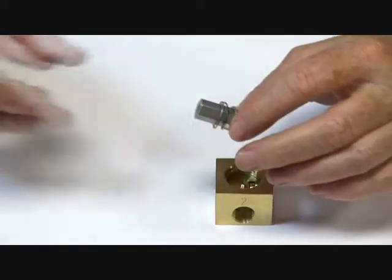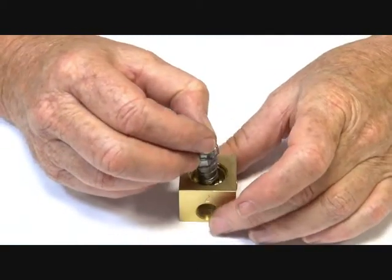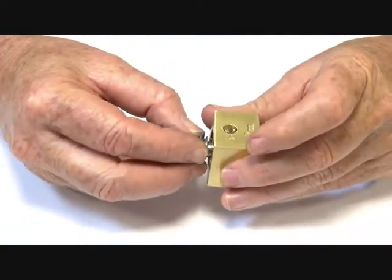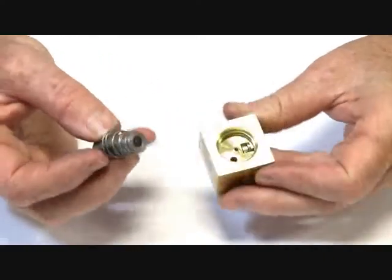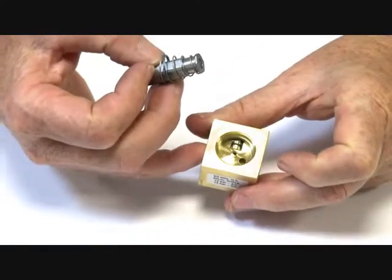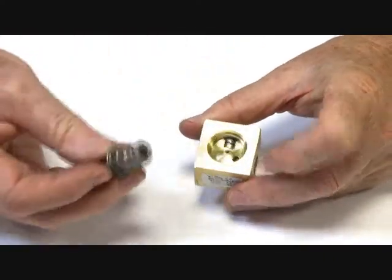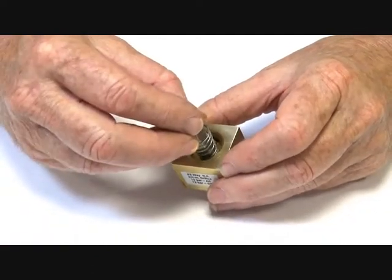So in the normal function, de-energised, this armature assembly is sitting down here with the spring. The media is coming in through port 1 and sitting underneath that jet, which is underneath this little seat, sealing off like that.